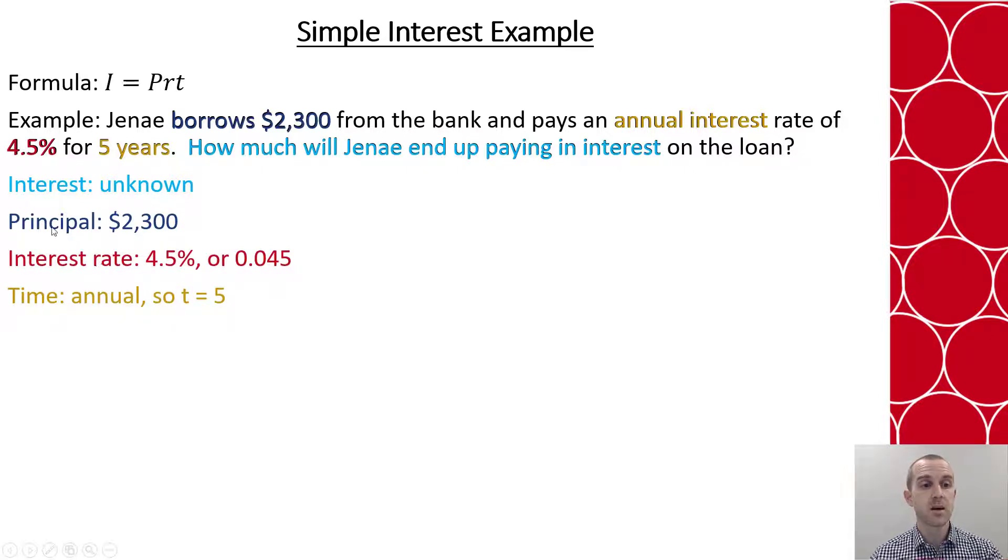With my P, my r, and my t, I can now calculate how much interest Janae will end up paying. So 2,300 times .045 times 5. Follow my order of operations and I multiply left to right.